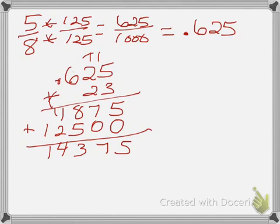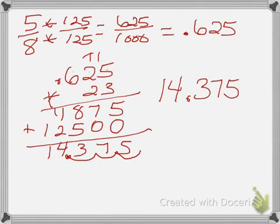We have 1, 2, 3 places after the decimal. So we're going to move our decimal in 3 places. 1, 2, 3. So we have 14 and 375 thousandths. So Jesse's cat weighs 14.375 pounds.